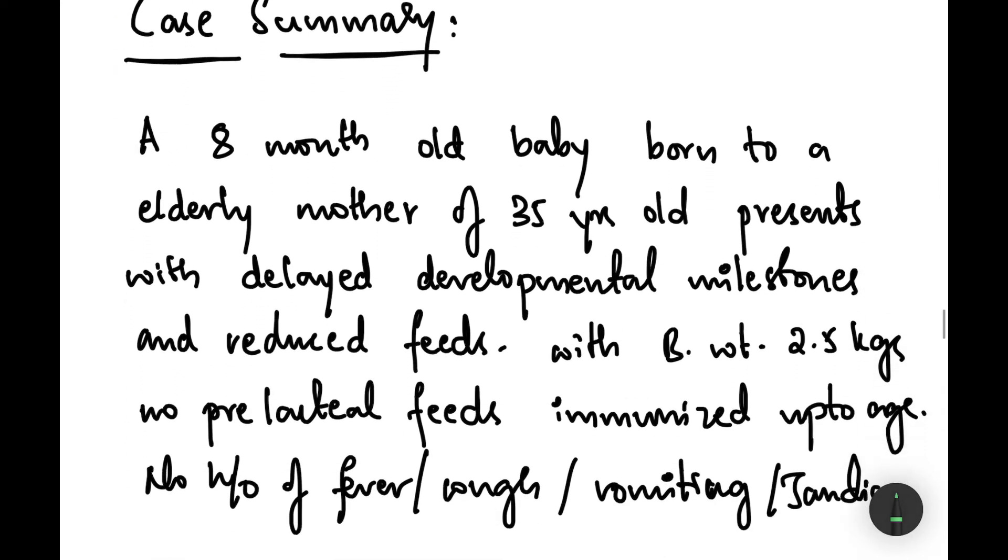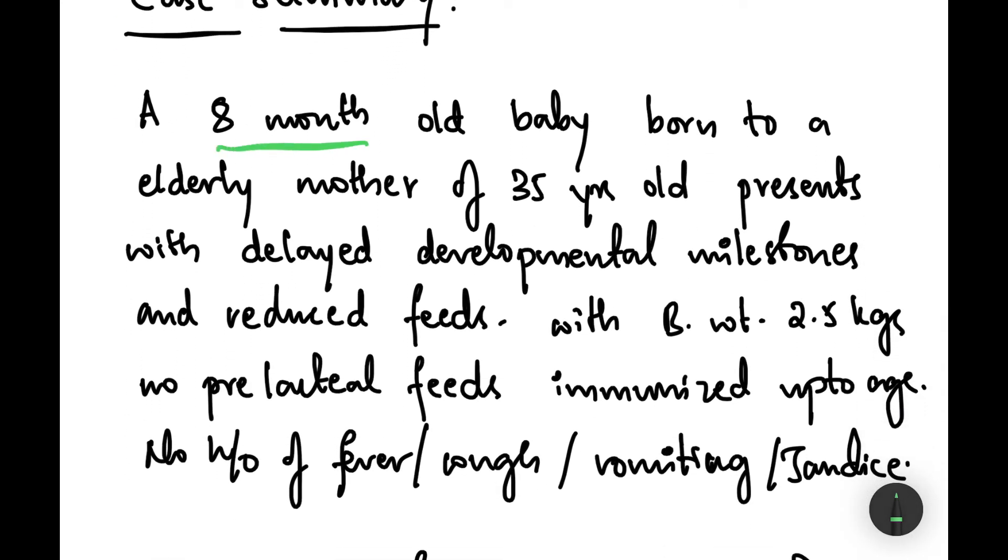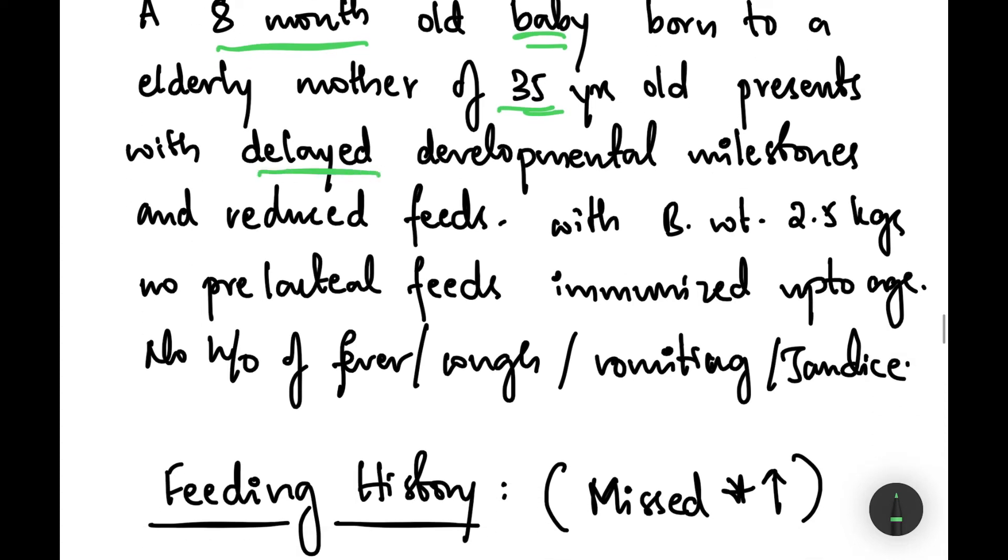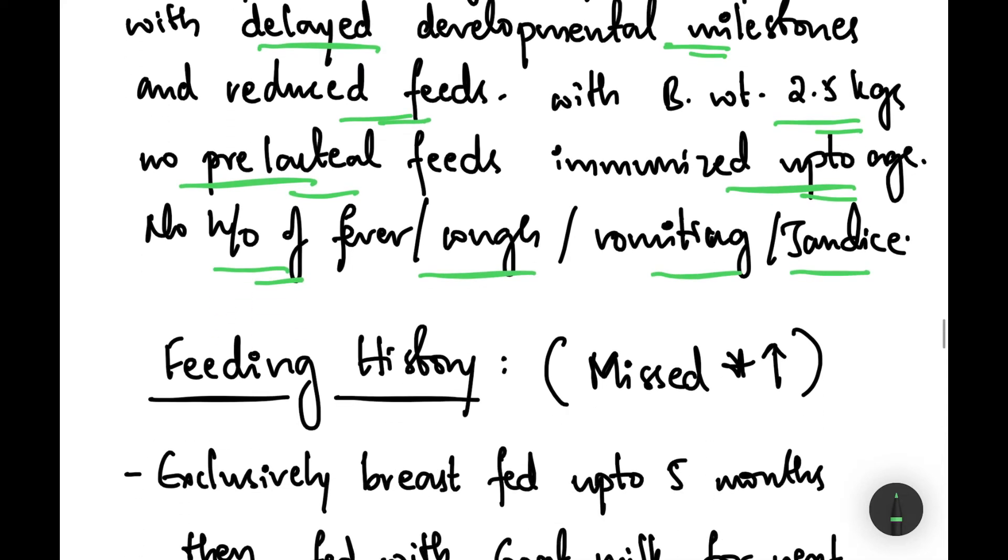Moving on to the case summary, this is an eight-month-old baby born to an elderly mother of 35 years old who presents with delayed developmental milestones and reduced feeds with birth weight of 2.5 kg with no pre-lacteal feeds, immunized up to age, with no history of fever, cough, vomiting, and jaundice.